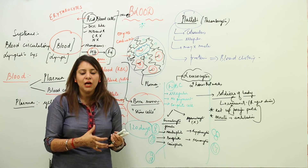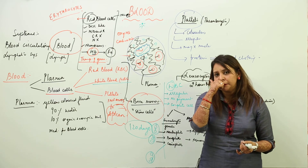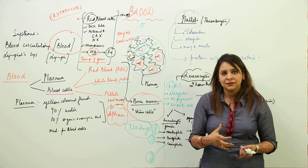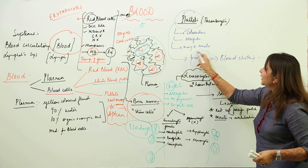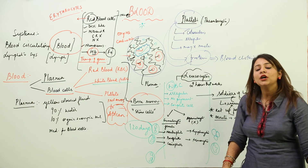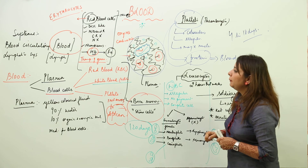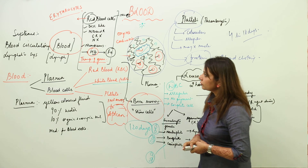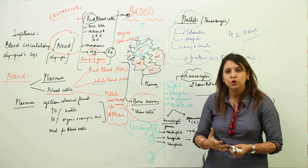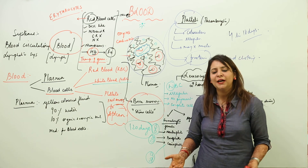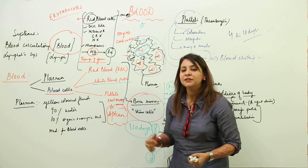Blood clotting is very important — whenever you get hurt, blood starts oozing out, and unnecessary loss of blood is called hemorrhage. To prevent this, blood clotting is essential. These clotting proteins are synthesized by the platelets. The lifespan of platelets is around 4 to 18 days. Now we will study blood groups, because you cannot donate blood to a person with a different blood group.